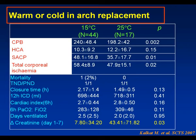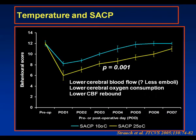Experimentally, the perfusate temperature of the SACP may also be important. Behavioral score data from a porcine model from Dr. Gripp's group showed that lower SACP temperature at 10 degrees centigrade was associated with better behavioral scores. They wondered whether this was related to lower cerebral blood flow and fewer emboli, reduced cerebral oxygen consumption during arrest, and lower cerebral blood flow rebound after restoration of corporeal flow.